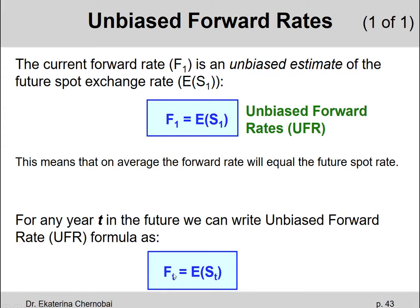So for example, a six month forward rate equals expected spot exchange rate in six months. So in general, if T represents any time T in the future, then the formula can be generalized as F subscript T equals expected, open parenthesis, S subscript T, close parenthesis.